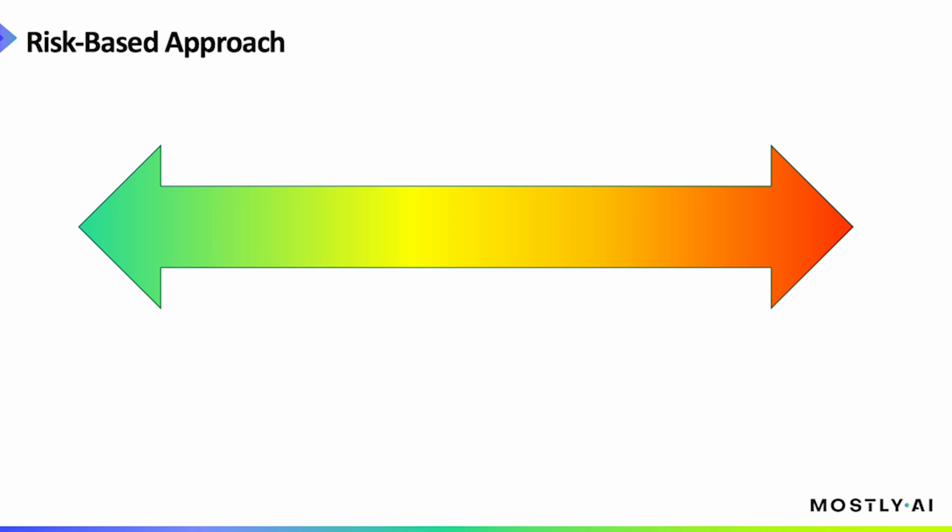Instead of saying, for example, any general purpose AI must follow obligation X, Y, Z, it classifies applications of AI systems according to their risk factor. On the one end of this spectrum, we have minimal risk applications, such as our video game NPCs.